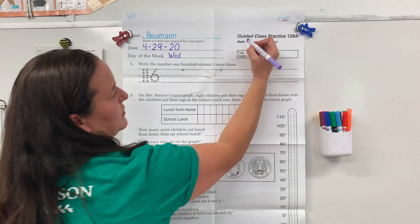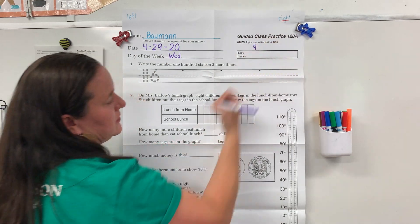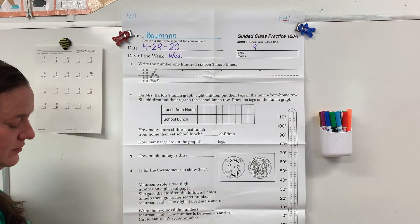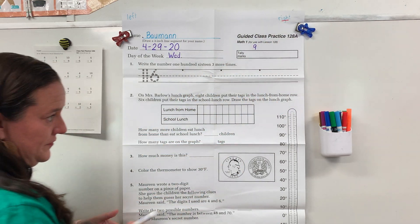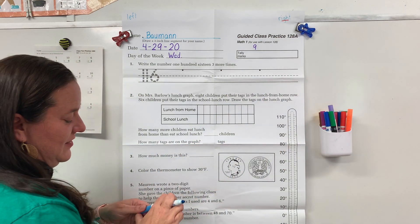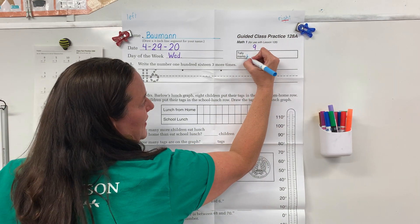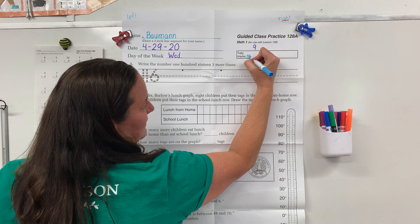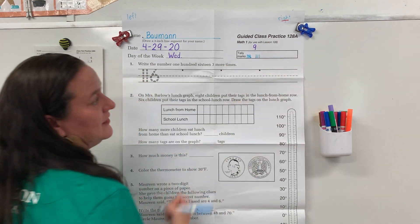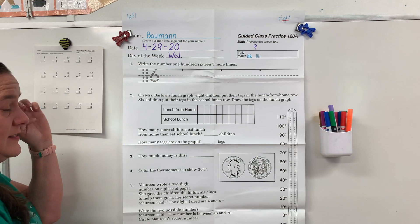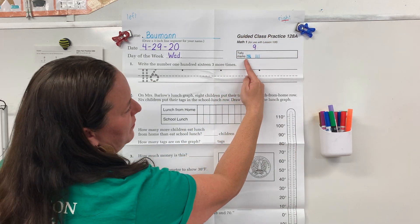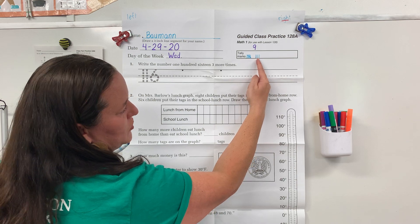I would like for you to do 9 tally marks. Pause the video until you have all this caught up and your 9 tally marks. See if you can work on making your tally marks the same size, about the same size space in between each one.